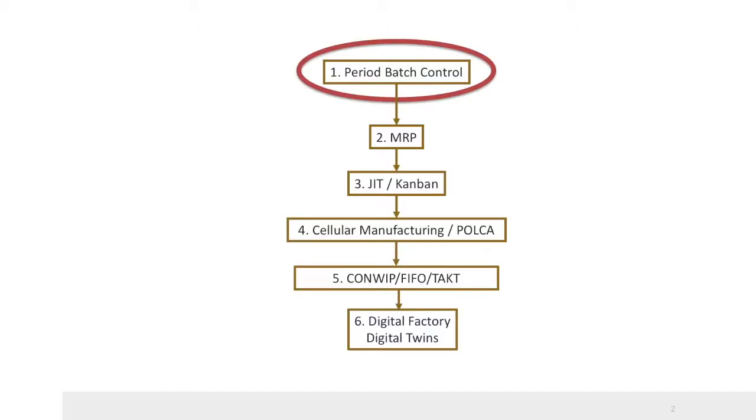Period batch control is a more than 80-year-old just-in-time system for production planning and control in high-variety, low-volume environments. Period batch control was developed in England in the 1930s by R.J. Gigli.